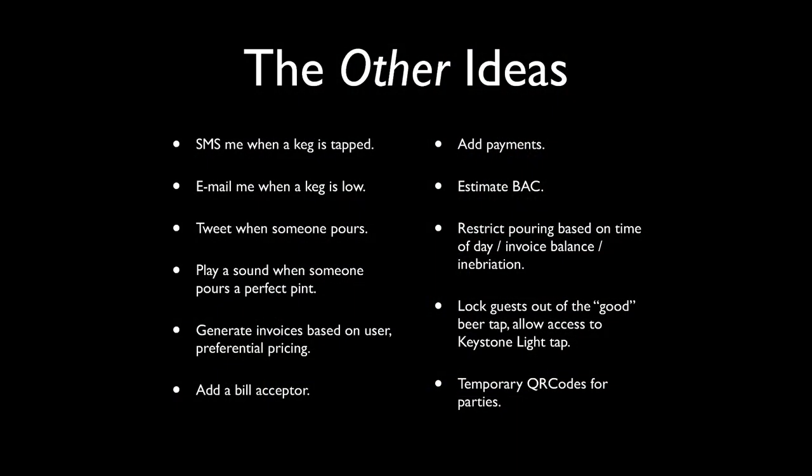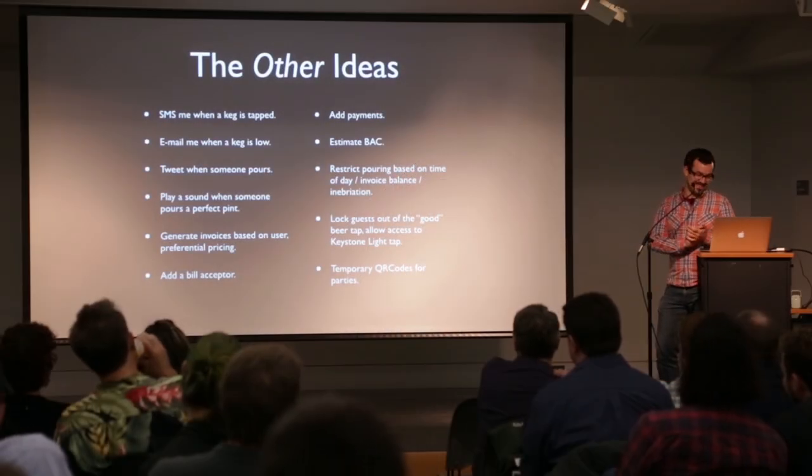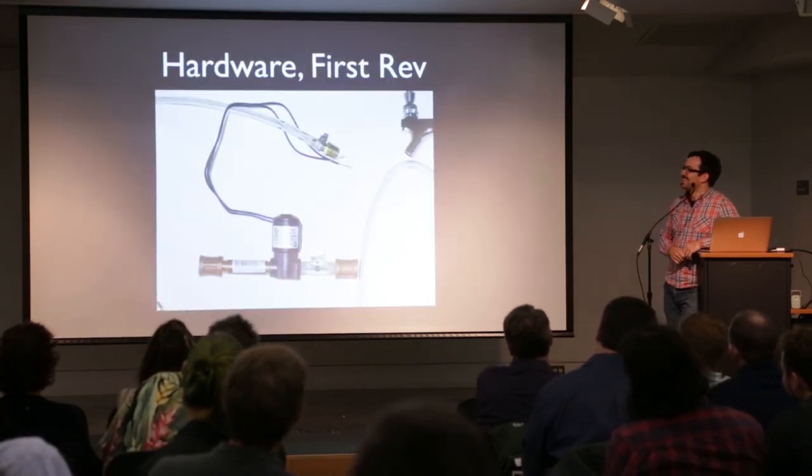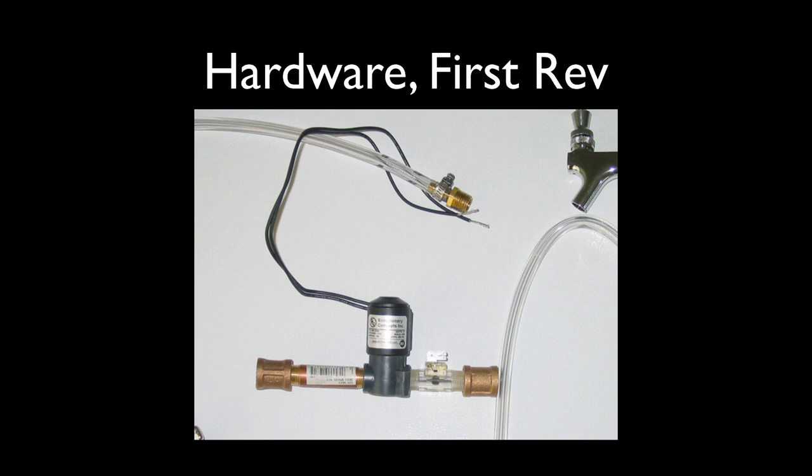If you think about this kind of idea, you realize you can get as crazy as you want. You can send a text when a keg is tapped, email when it's low, tweet when someone pours, play a sound. I went crazy with billing — I had this grand idea that some friends who would be undesirables would get a higher bracket, ten cents an ounce instead of five, and invoices would come to them. Not all of this was implemented, but we're about experiments.